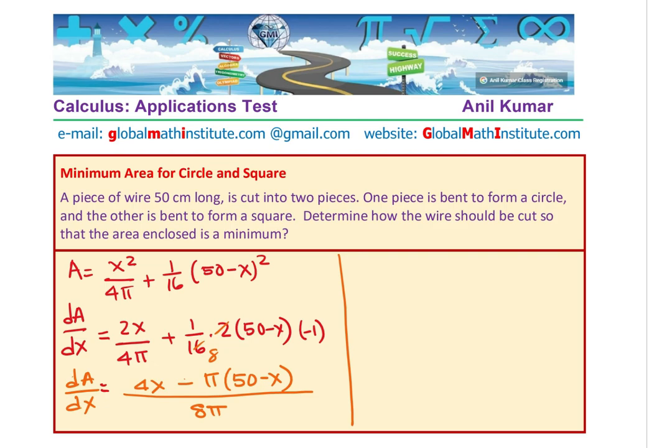To find the critical number, I am going to equate this to 0. Equating this to 0 means the numerator should be 0. We have 4x minus pi(50 minus x) equals 0. We can take x common, so we get 4 plus pi times x equals 50 pi. Therefore, the value of x equals 50 pi over (4 plus pi).